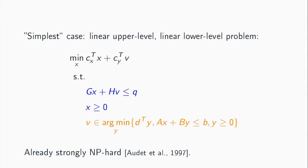If we take out all the complexity and try to get the simplest possible bi-level problem — say a linear bi-level problem where objective functions and constraints are all linear — even in that case, you end up with NP-hard problems. So this form of problem is already NP-hard.